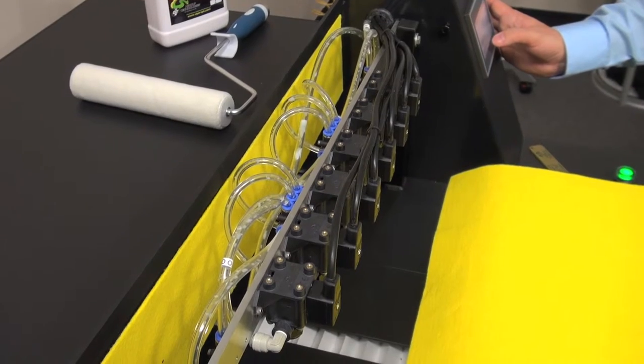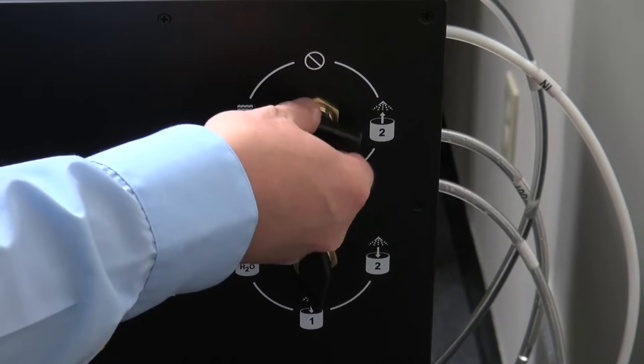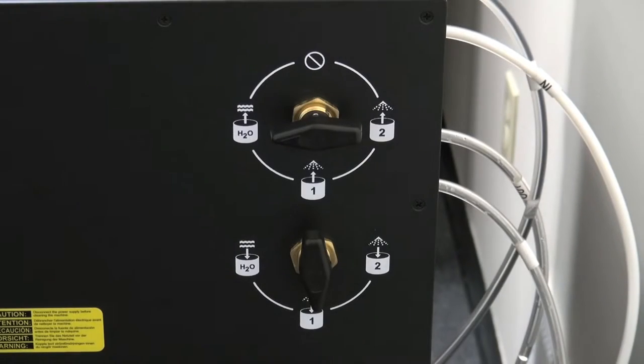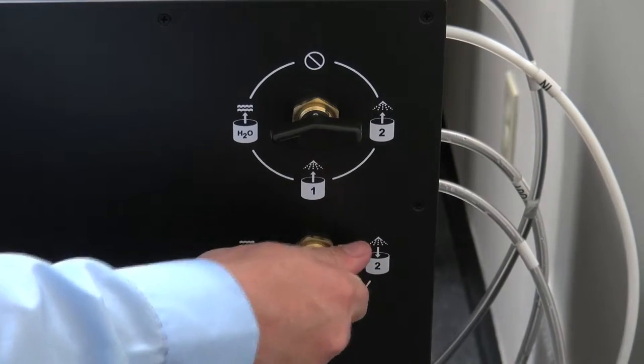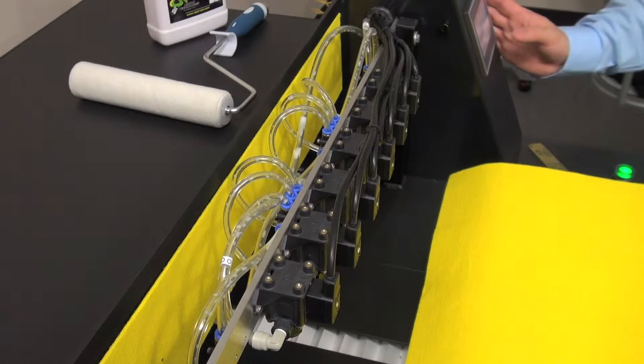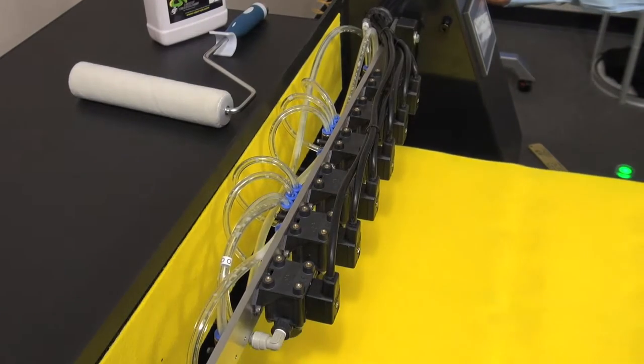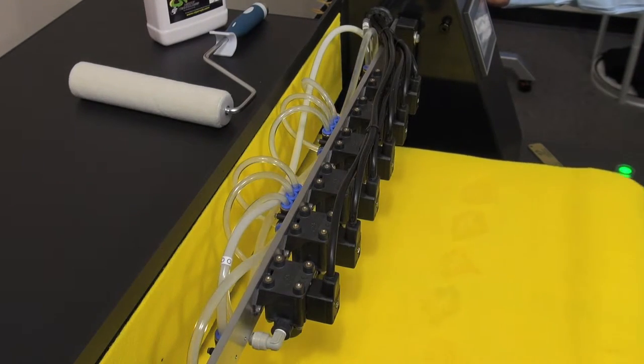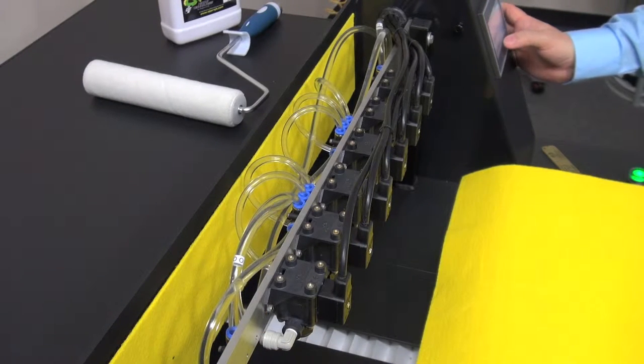Press next on the menu. Change the fluid in valve to water. Change the fluid out to waste. Press the start button. The machine will flush water through the lines. When the pump turns off, press next.